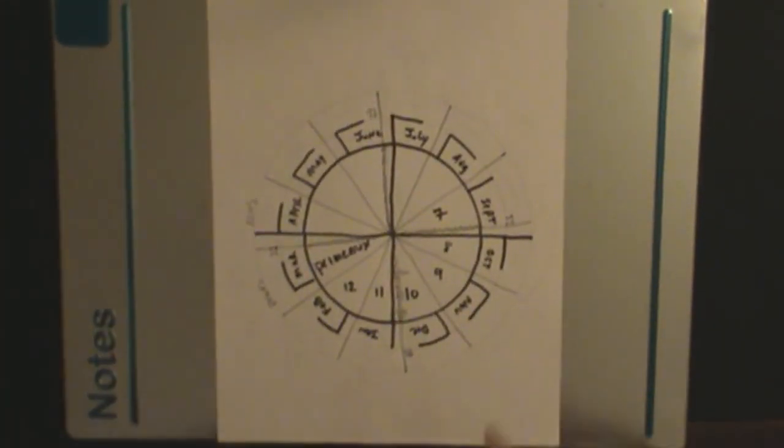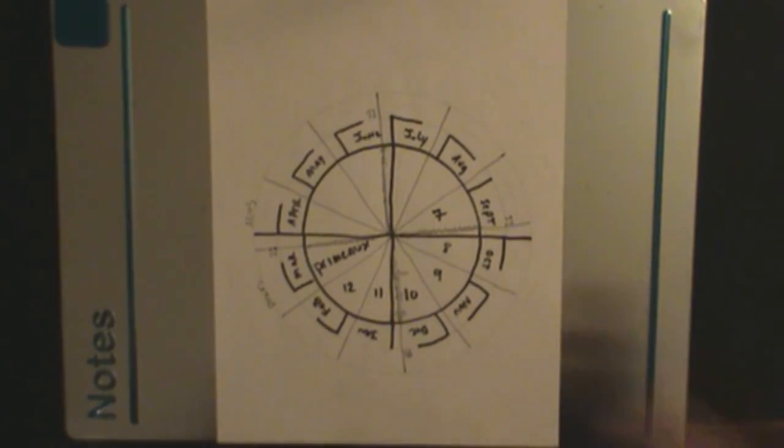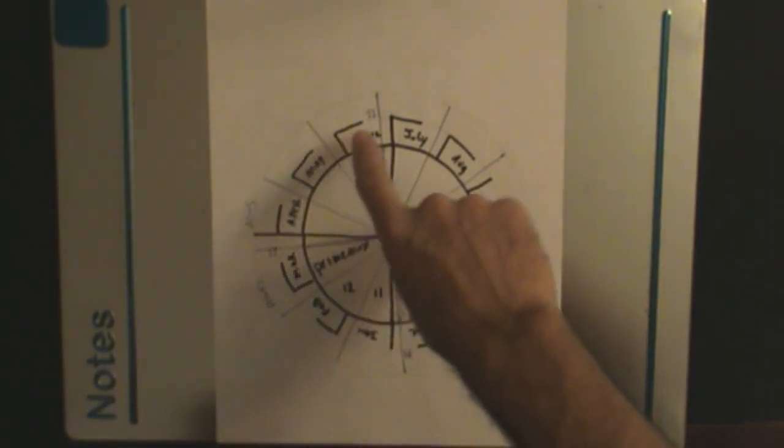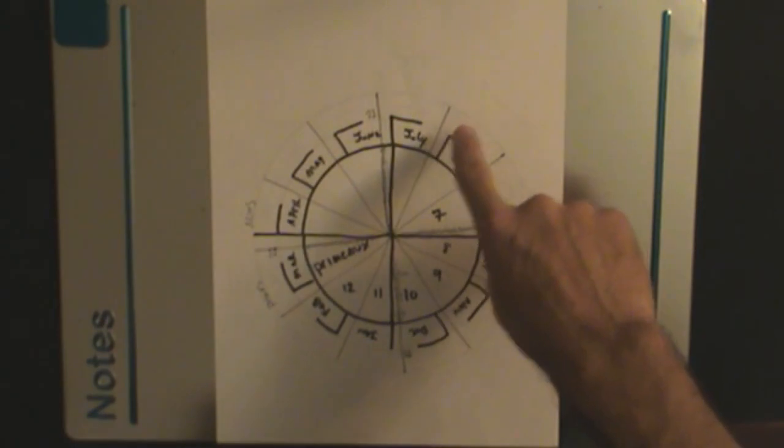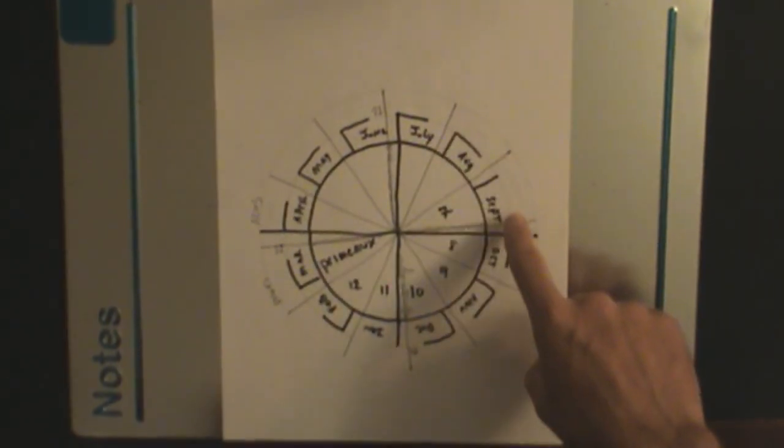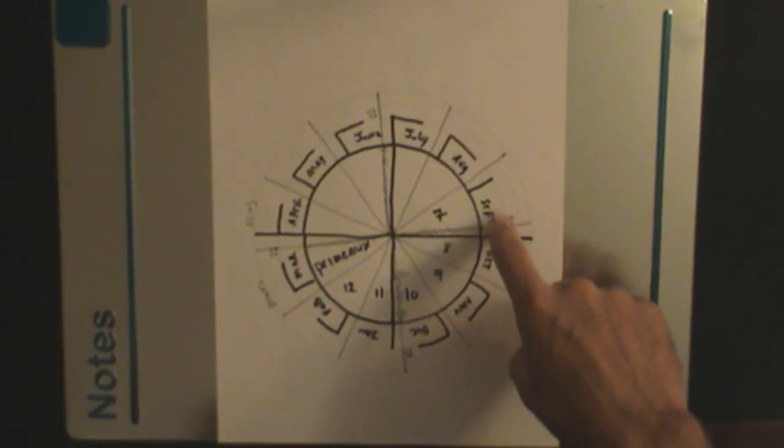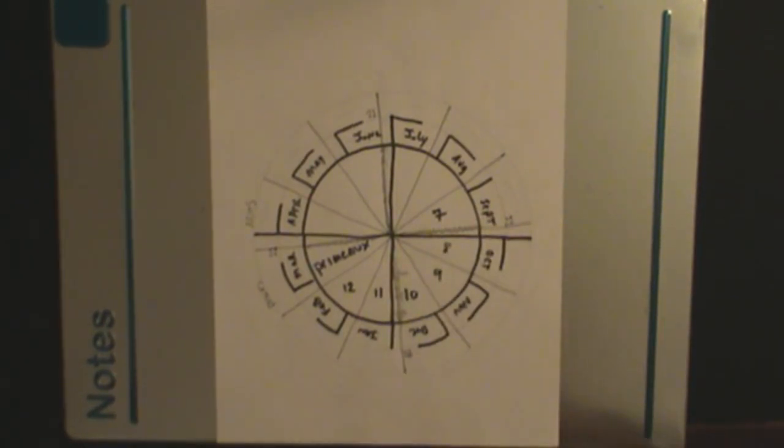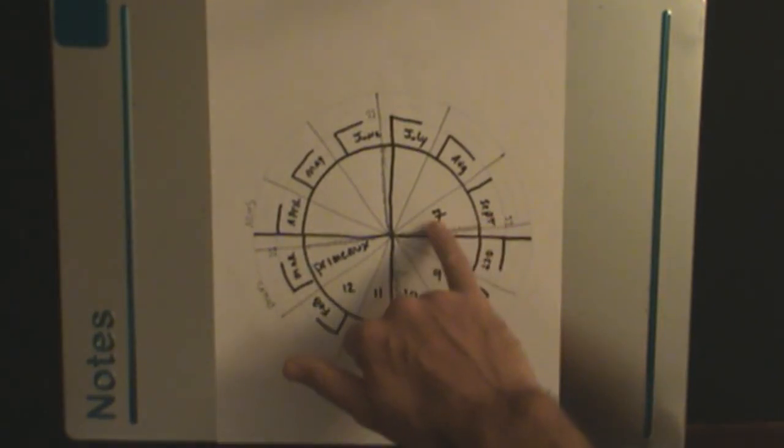So March is called primo, and the reason why I can prove that is as you go around the calendar and you come over to, say, September.